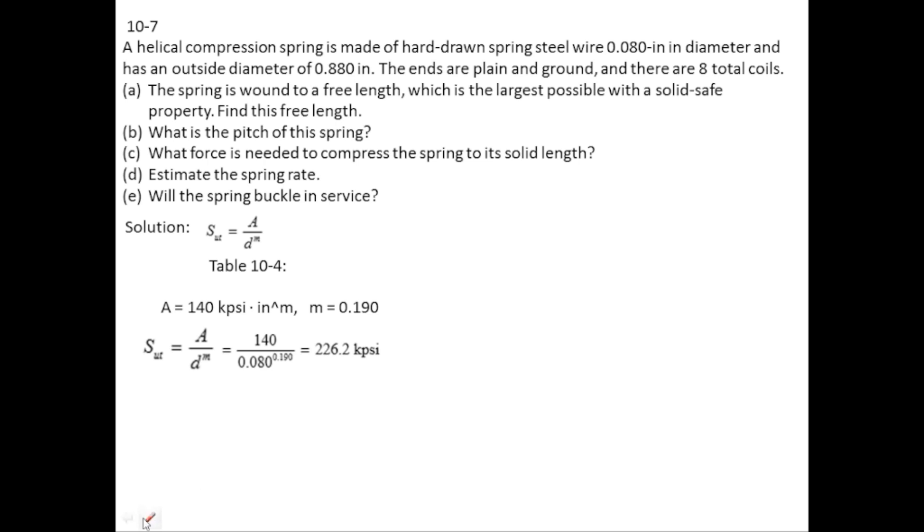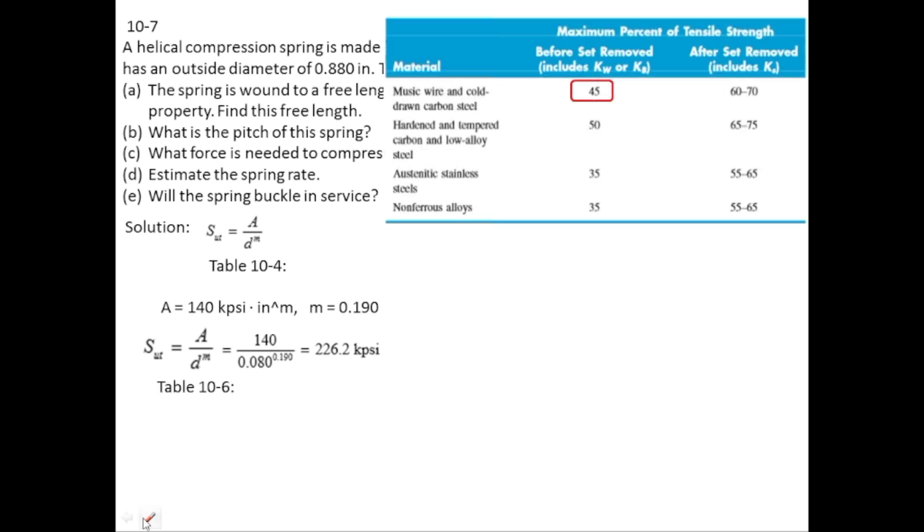Torsional yield strength is some percentage of SUT, and that percentage is taken from table 10.6 which is 45 percent for music wire and cold drawn carbon steel. So SSY equals 0.45 times 226.2, giving 101.8 kpsi.